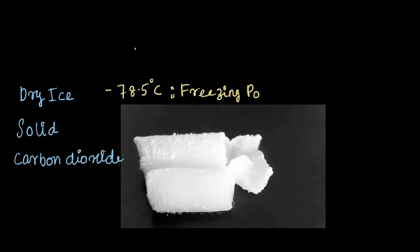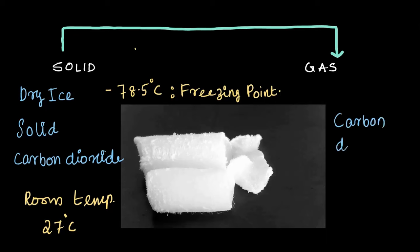When we take dry ice out of this super cold temperature and place it on a table at, say, a room temperature of about 27 degrees Celsius, what happens? The solid dry ice doesn't turn into liquid. The solid dry ice directly turns into gas - that is, carbon dioxide gas.